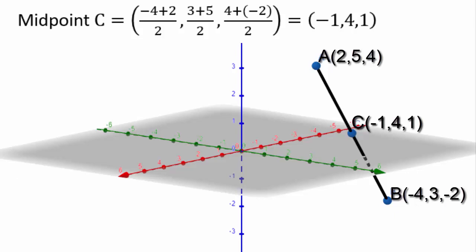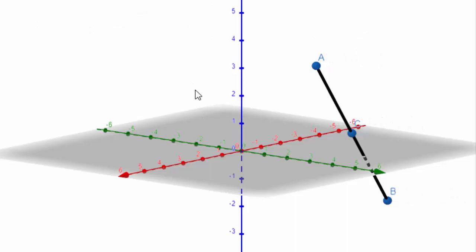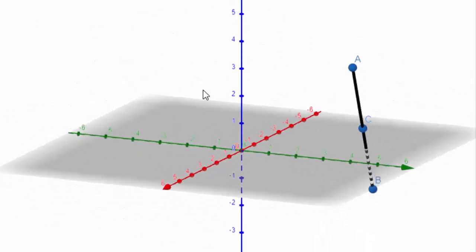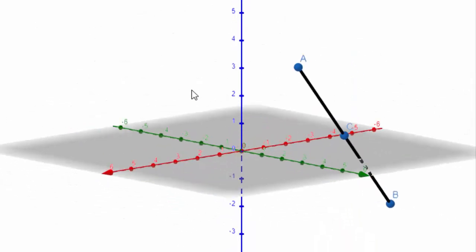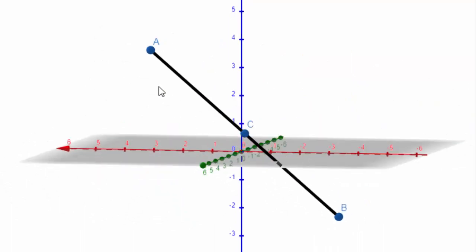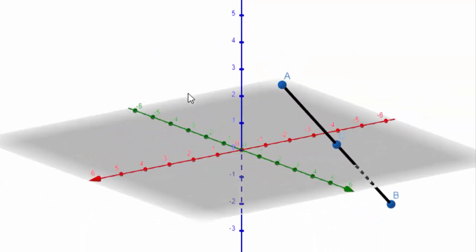And so if you turn it, you can see from all the different sides how it looks. So again, the midpoint was exactly how we did it before, midpoint of each of the x, y and z coordinates, nothing new.